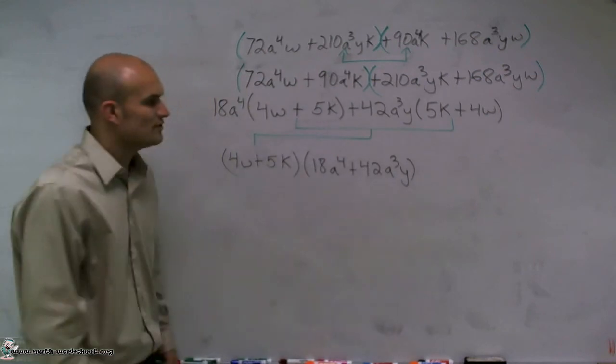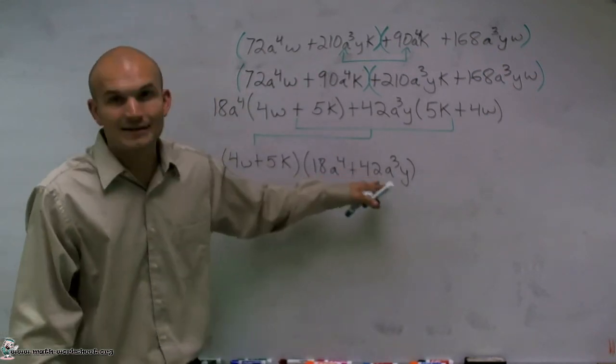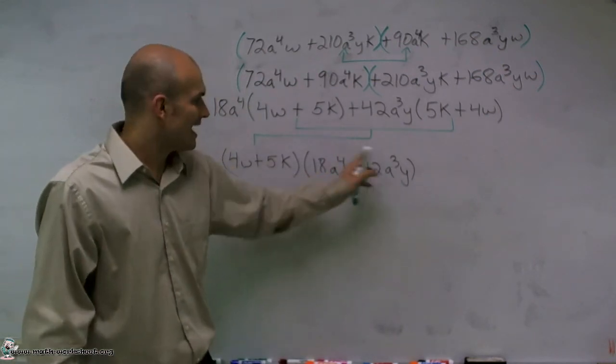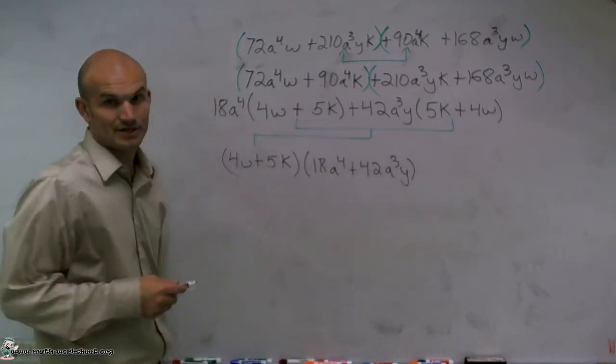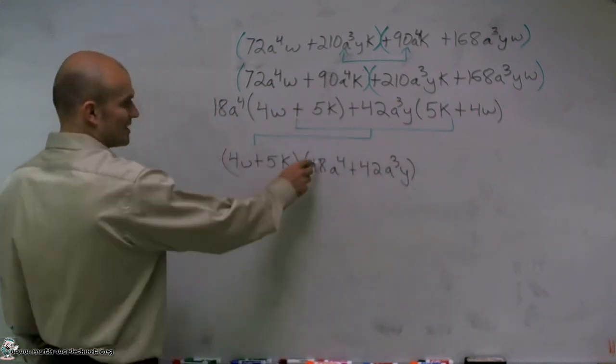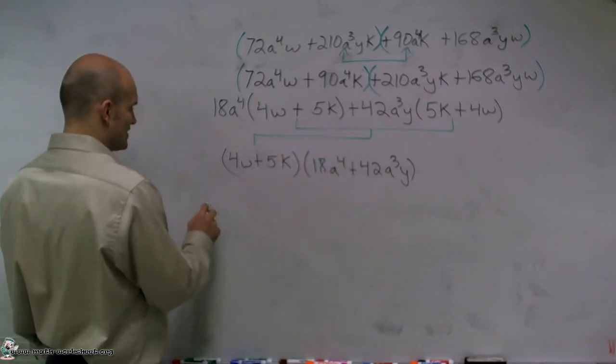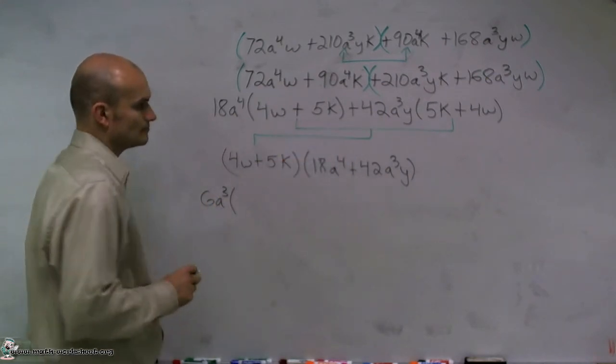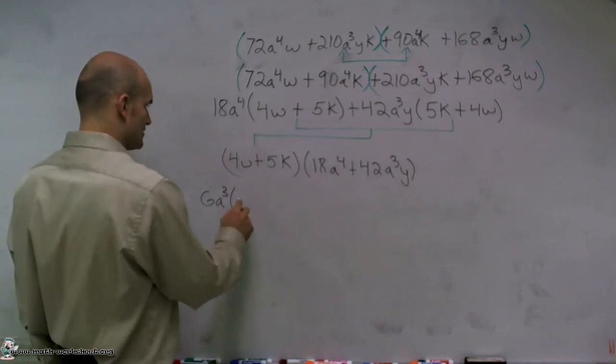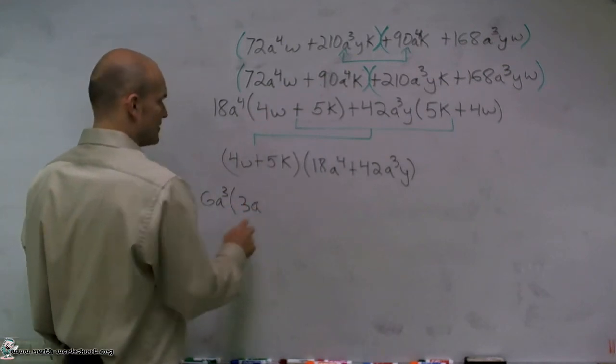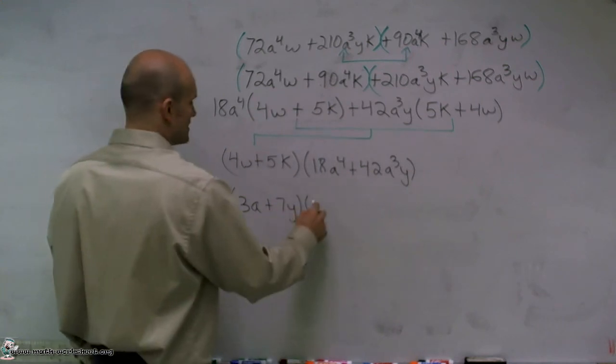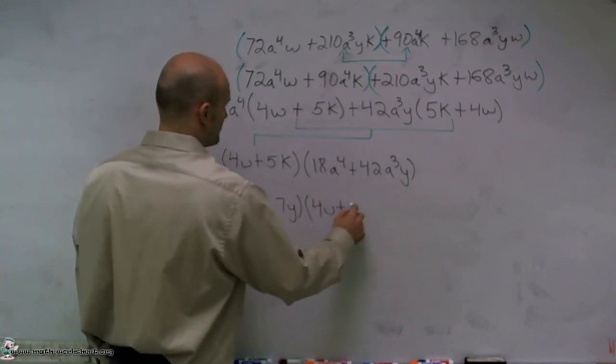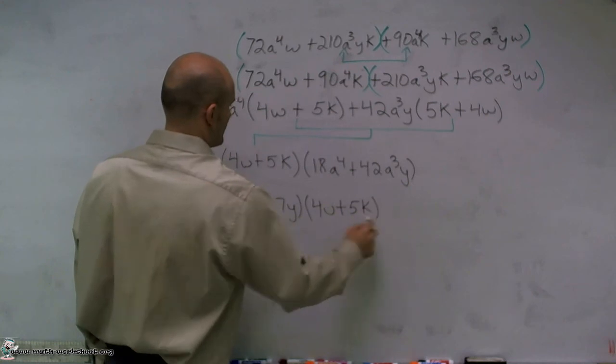It's important for you to understand that over here I can factor out again out of these two terms. So I can factor this even further. So my final answer for my problem is going to be, I can factor out a 6a cubed, which will leave me with 3a plus 7y times 4w plus 5k.